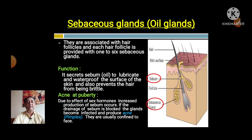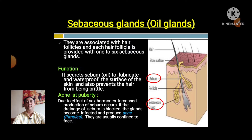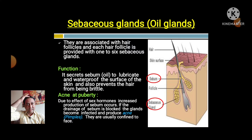Sebaceous glands are associated with hair follicles, and each hair follicle is provided with one to six sebaceous glands. Their function is to secrete sebum to lubricate and waterproof the surface of the skin and prevent the hair from becoming brittle. However, a disadvantage is that at puberty, due to the effect of sex hormones, increased production of sebum occurs, which can produce acne. If the drainage of the sebum is blocked, problems such as boils on the scalp or acne on the face can develop.